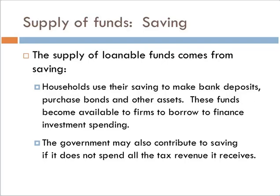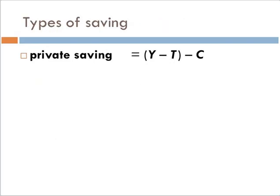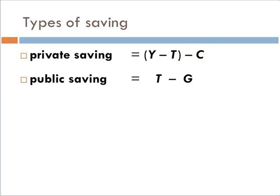The government may also contribute to savings if it does not spend all the tax revenue it receives. So if the government has a surplus — which is rare in our history — it can also contribute to savings. Private savings equals disposable income minus consumption. Public savings is the government's total tax revenue minus government spending, and if positive, that gives us a surplus for a given period, which we call public savings.